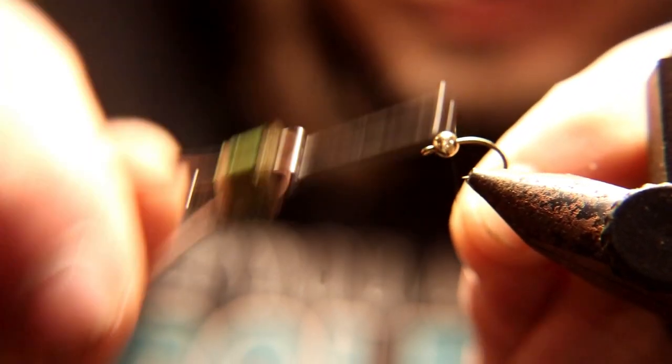Put a size 12 caddis hook in the vise and a gold bead. The gold bead will depend on what size hook you're using. I recommend you tie these in size 14, 12s, and maybe 10s, depends on the size in your creek. We're going to tie this on the size 12 with a bead that matches. Those packs of beads will tell you what hook size they match. For this fly we're going to use 70 denier black tying thread.